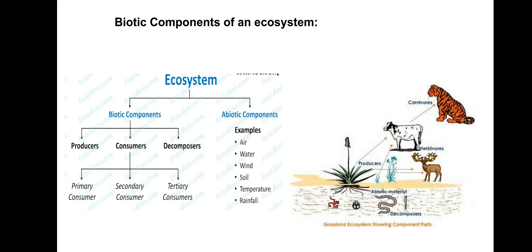Biotic components of an ecosystem: the living components of an ecosystem are called the biotic components. These include plants, animals, as well as fungi and bacteria. These biotic components can be further classified based on energy requirement sources. The ecosystem is divided into two components — biotic and abiotic. Biotic components are divided into three: producers, consumers, and decomposers. Consumers are divided into primary, secondary, and tertiary consumers. Abiotic components include air, water, wind, soil, temperature, and rainfall.